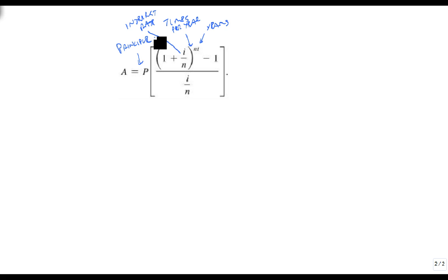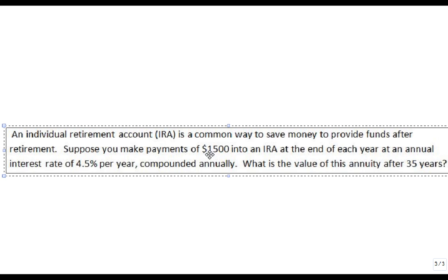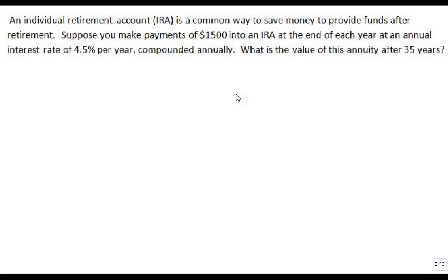And so now that we have our formula, we're going to use it. Let's suppose that we're looking at the following problem. An individual retirement account or an IRA is a common way to save money to provide funds after retirement. Suppose you make $1,500 payments into an IRA at the end of each year at an annual interest rate of 4.5% per year. What is the value of this annuity after 35 years? Notice this is compounded annually.